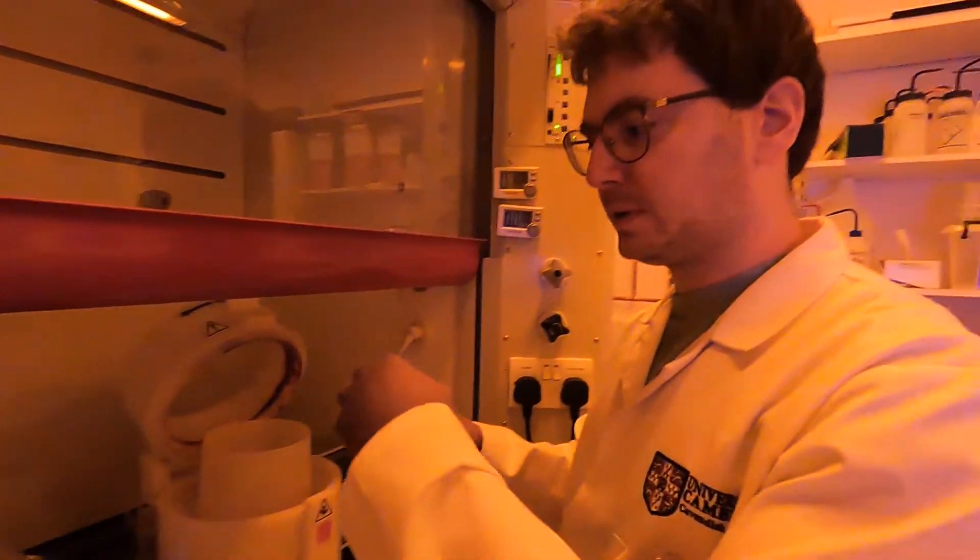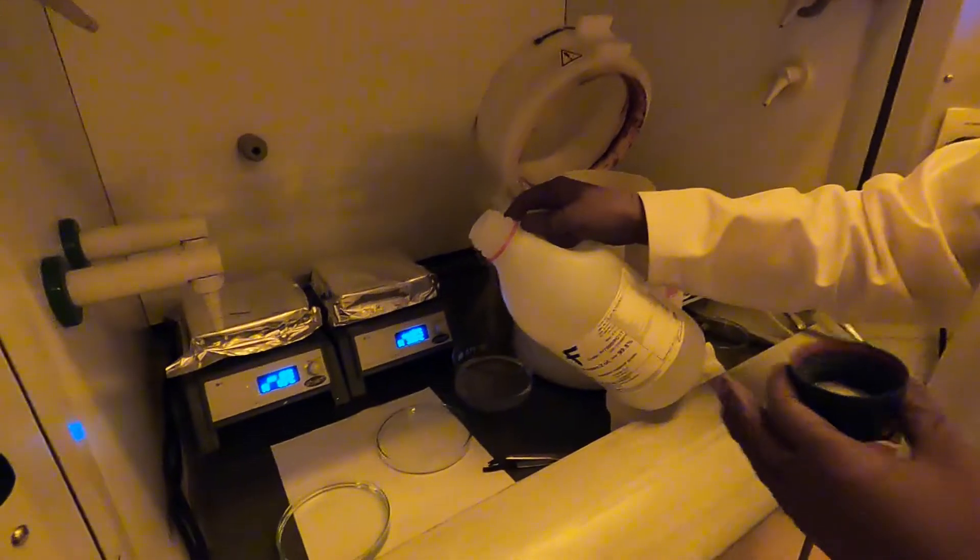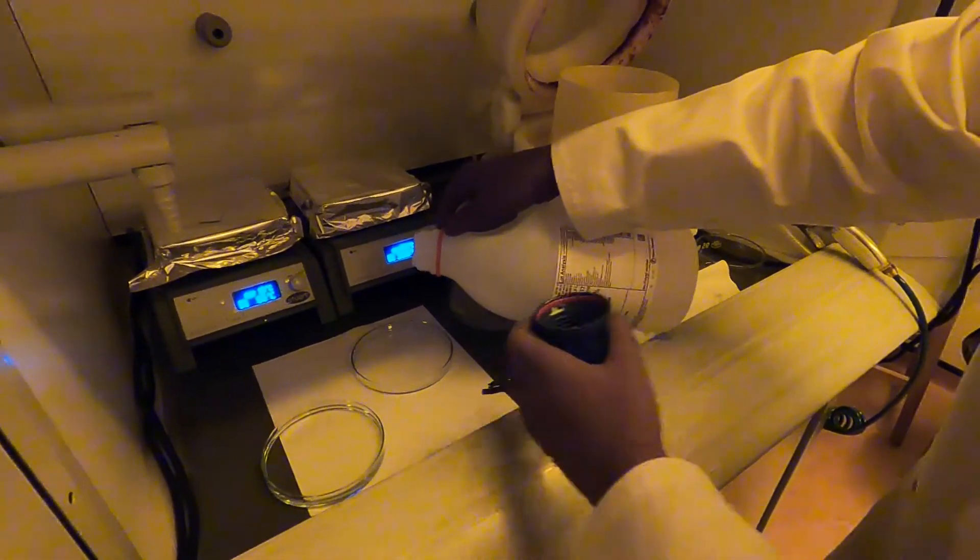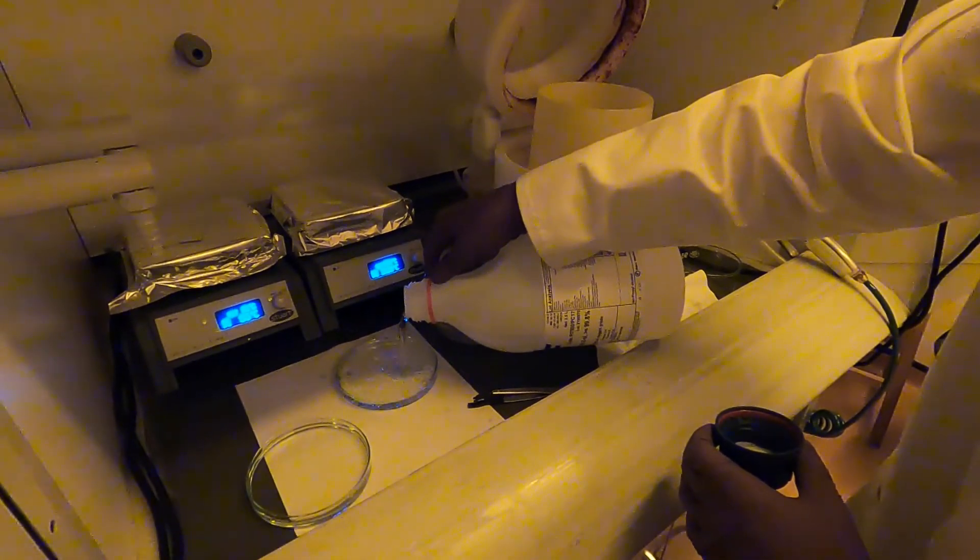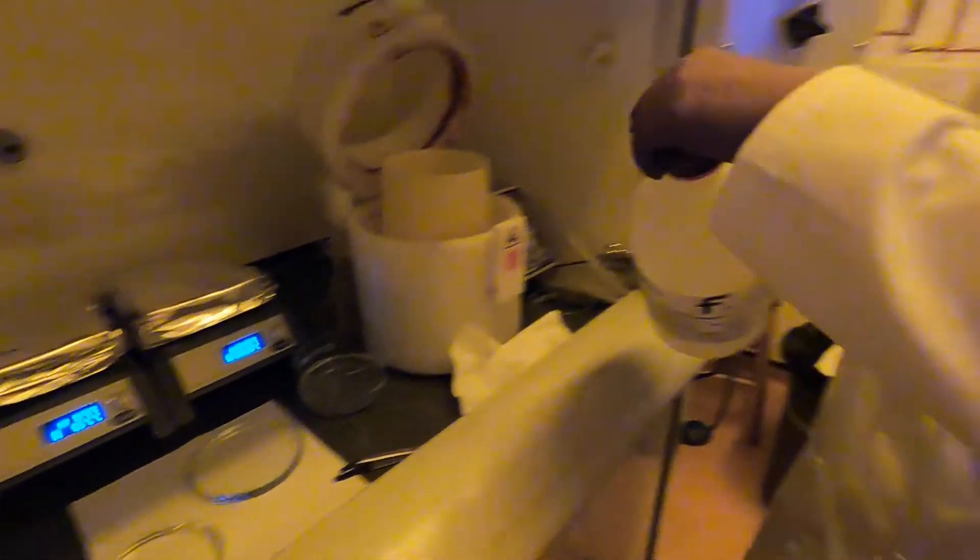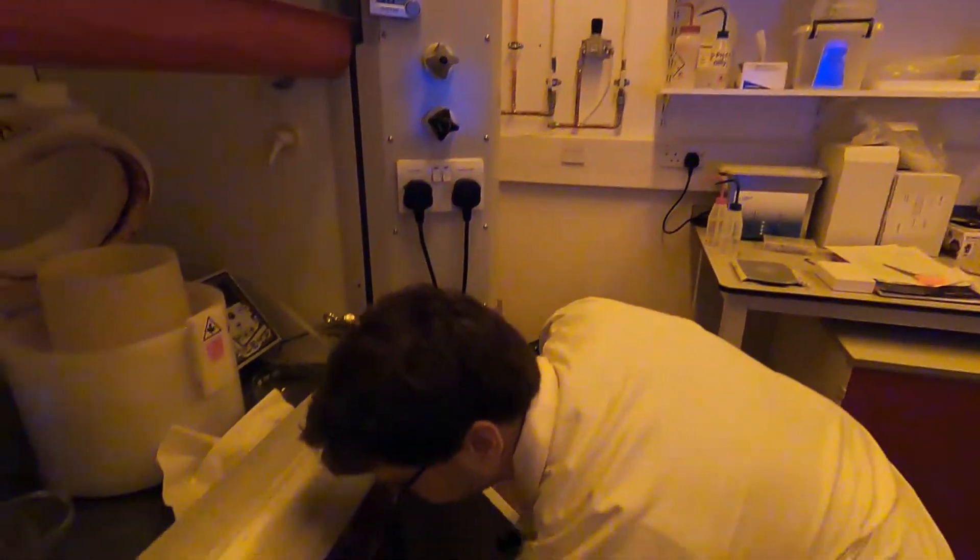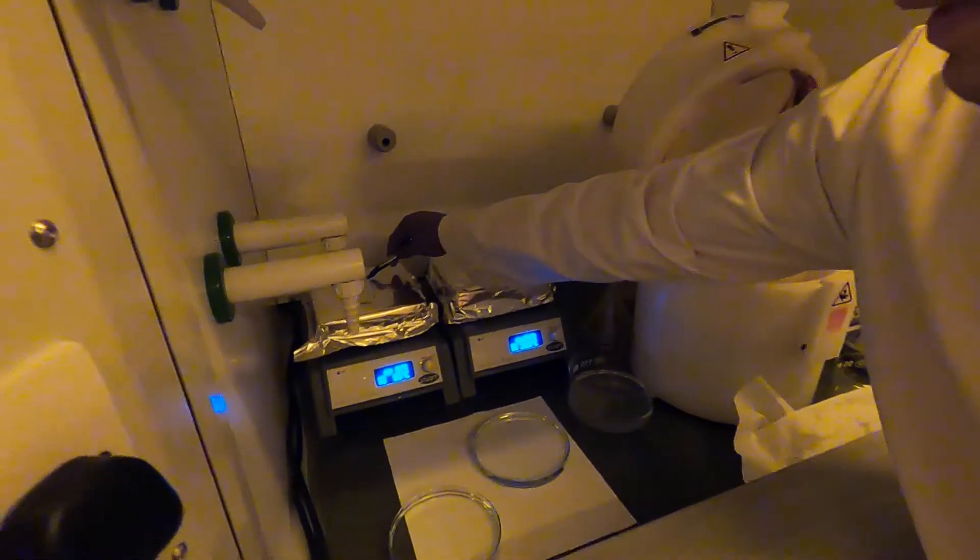In the second half of the petri dish, I'm going to put isopropanol. The isopropanol is used to interrupt the development. The PGMEA will do the actual development and remove the unexposed SU-8. Then we will transfer the sample into the isopropanol to stop the development and check that we have developed correctly. I'm now going to take the sample off the hot plate.